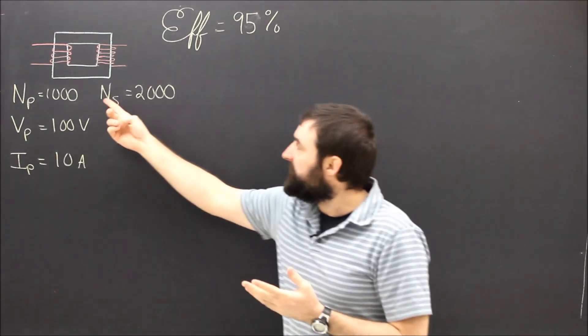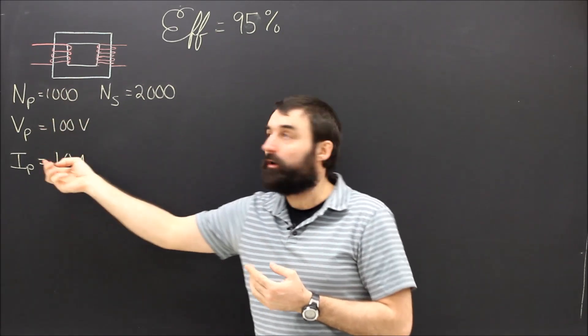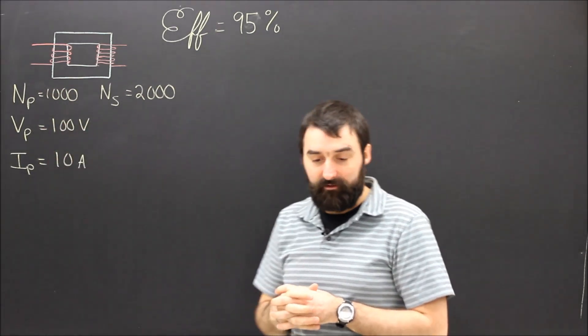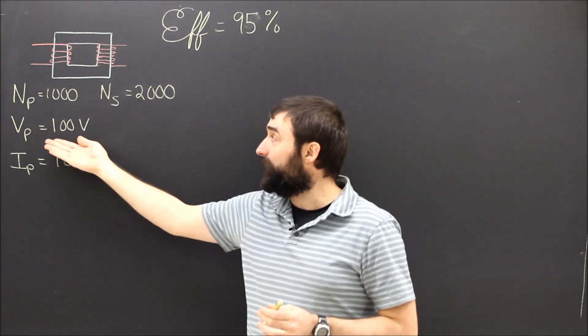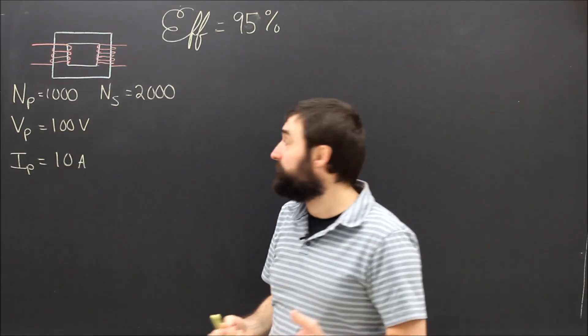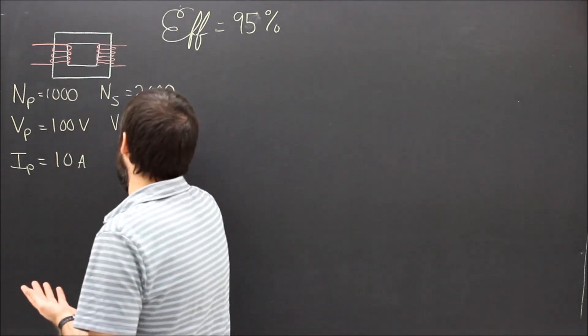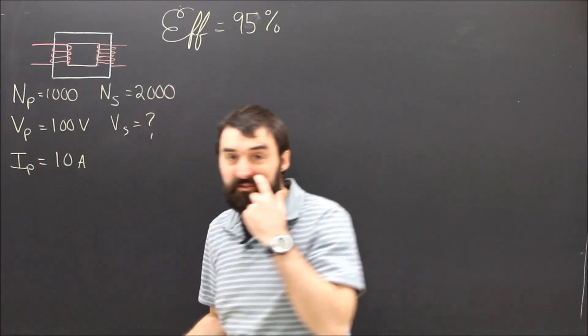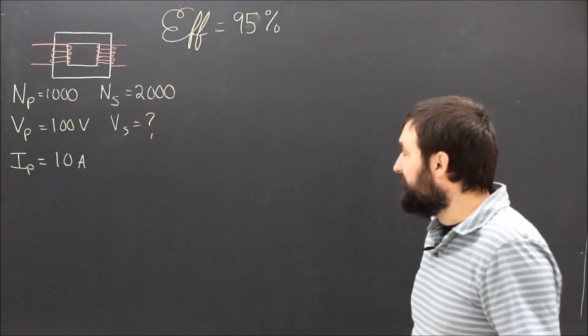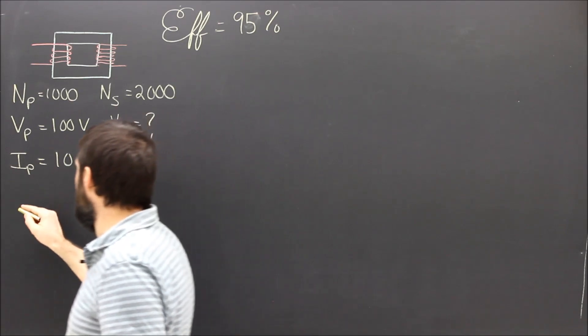So our particular transformer here has a thousand turns on the primary coil and 2,000 on the secondary coil. The voltage going into it, the primary voltage, is 100 volts. So the first question, of course, is what is the secondary voltage? If you've practiced enough, it should be easy, but let's just use the formula and find out.